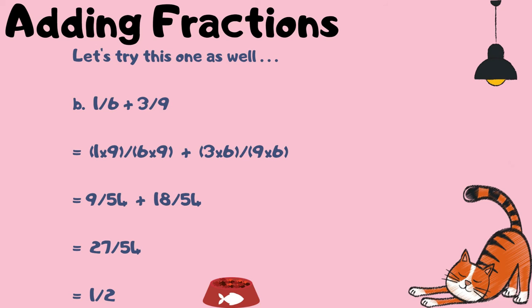Let's try this one as well. You have 1 over 6 plus 3 over 9. The denominators are not the same, so you multiply each by the other: 6 times 9 and therefore 1 times 9; then 9 times 6 and therefore 3 times 6. You end up with 9 over 54 plus 18 over 54. Your common denominator is 54, so you simply add 9 and 18, which gives you 27 over 54. Since 27 into 54 goes twice, that simplifies to 1 half.